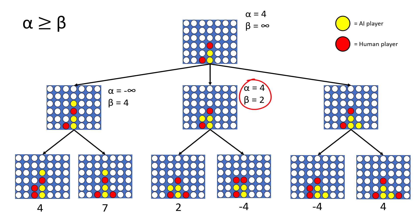Notice here that alpha is now greater than beta, which means that there is no need to look at the rest of the options. That is because at this level, min gets to choose, which means that min will never choose a number that is larger than 4, when it already has a smaller option of 2. So we don't need to look down the rest of this tree, and we can safely prune this branch to save on computation power.